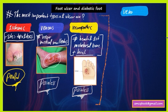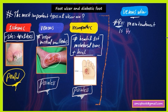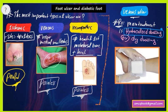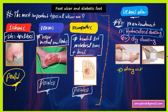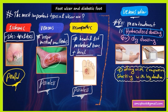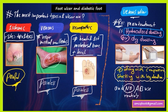Some important notes related to venous ulcer: the main line of treatment is hydrocolloid dressing or dry dressing — hydrocolloid dressing is best, but if not available in the choices, use dry dressing. Use this along with compression stocking and leg elevation. There is no routine use of antibiotics in venous ulcer; it is only used in special situations.